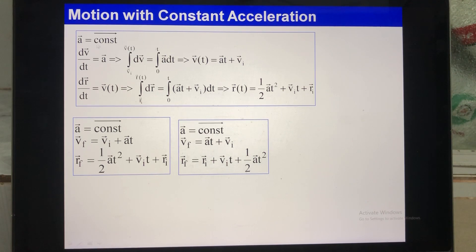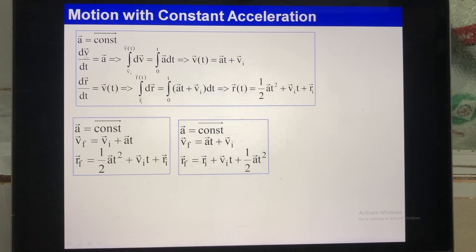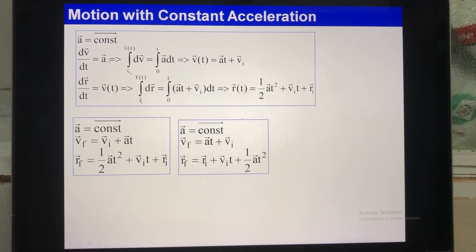Always remember: A is a constant. Acceleration represents the change of velocity with respect to time — this is the instantaneous acceleration. You take the derivative of V with respect to time. From here, you can do the integration: move dt to this side, then take the integral on both sides.